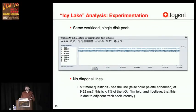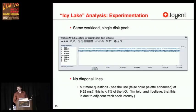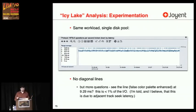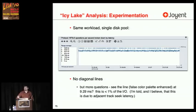Continuing with the experimentation: the same workload for a single disk pool — back to NFS latency, no diagonal lines, but more questions. See the line at the top? The false color palette has highlighted it — it's at 9.29 milliseconds and it's less than 1% of the IO. I had no explanation for what this was, but it turned out to be due to adjacent track seek latency. Normally writing to a track in 8-kilobyte sizes, these 7,200 RPM disks have about 7-point-something millisecond latency. Occasionally you fill a track and the heads skip to the next one. I'm actually visualizing tracks on a disk, visualizing the latency incurred when the disk heads skip to the next track because a track was filled.